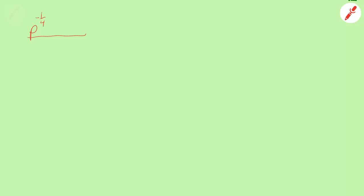We're going to do another rational exponent problem. We have a fraction. Here's the numerator: p to the negative 1/4, q to the negative 4/3, over the denominator, which is 2 to the negative 1, p to the negative 3, q to the negative 1/4.